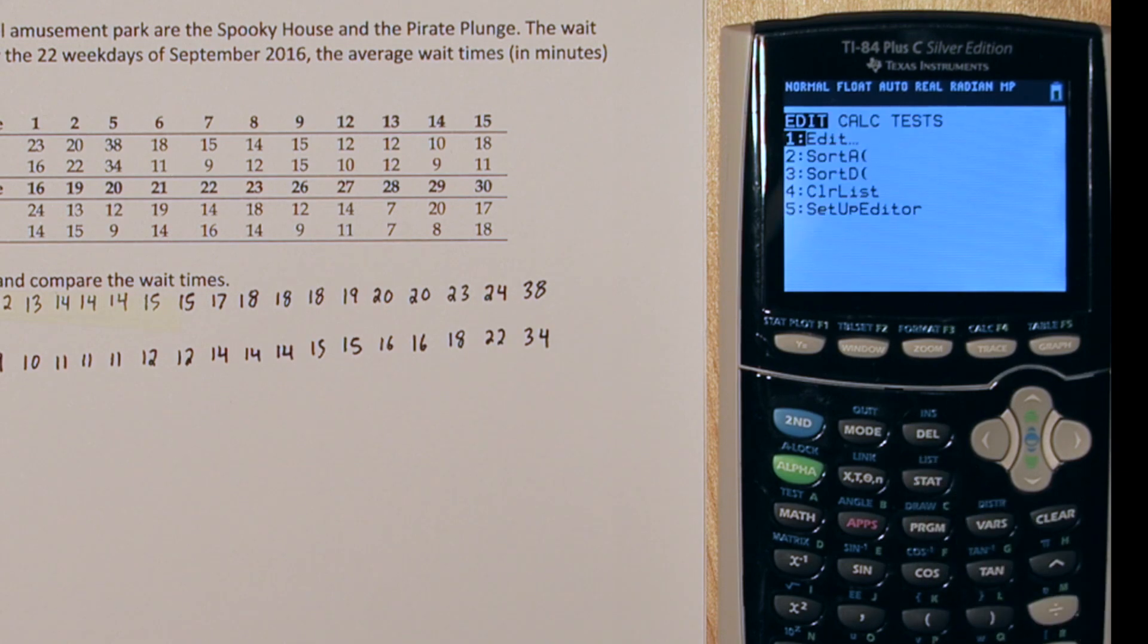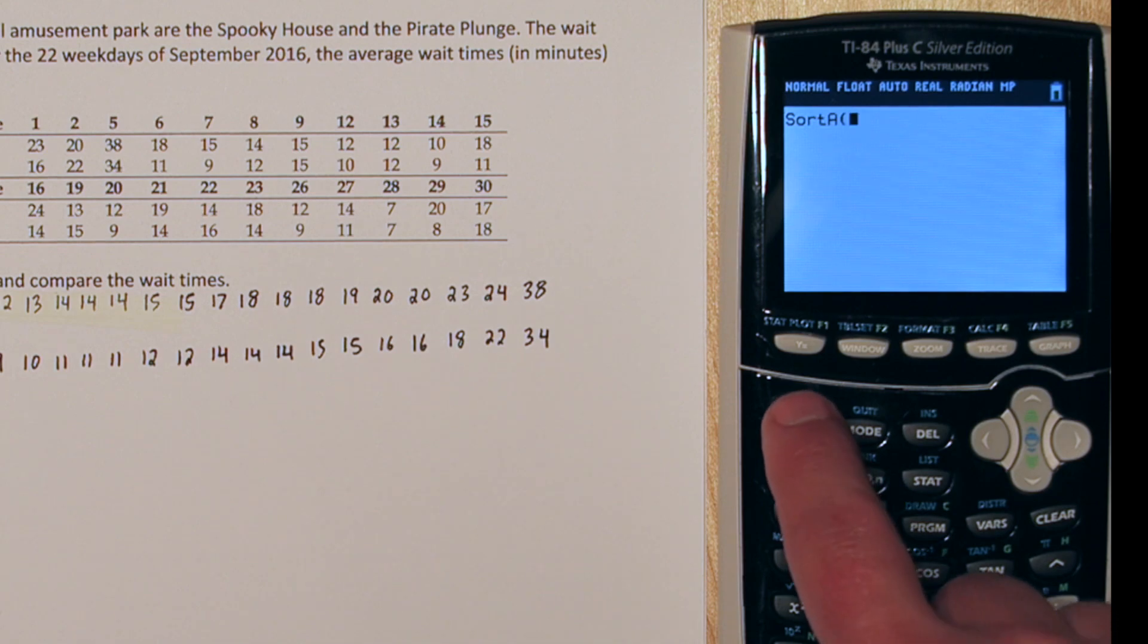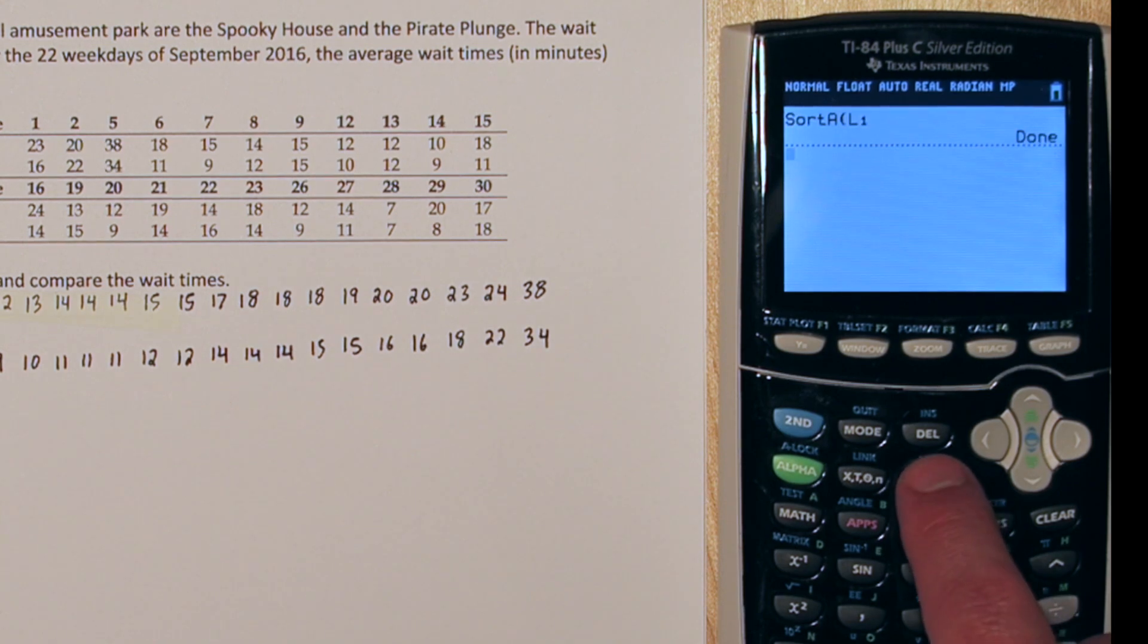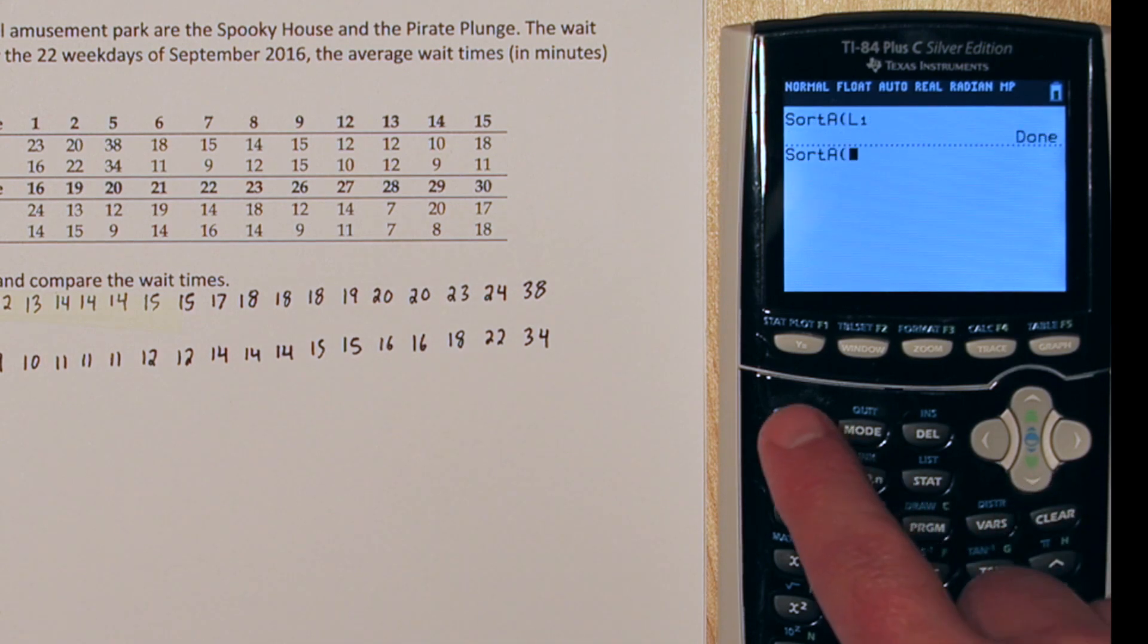Now press the STAT button again. Go down to sort A. This is for sort ascending. And after we push it, if we press 2nd and list 1, we can actually sort all of list 1. Now we'll press STAT again and do the same thing for list 2.